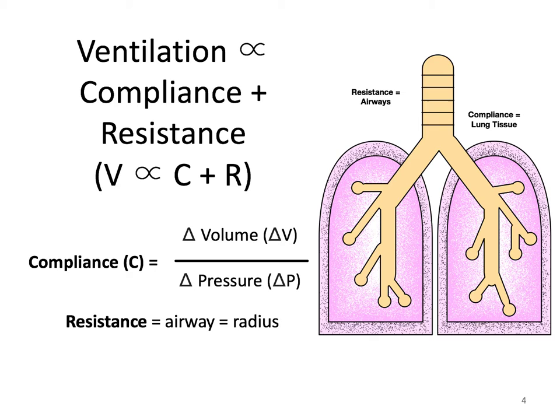Compliance is further defined as a change in volume over a change in pressure. Pressure and volume are inversely proportional — when you have an increased pressure, you have a decreased volume, and when you have a decreased pressure, you have an increased volume. Resistance, on the other hand, refers to the airways and is primarily a function of the radius of the airway.